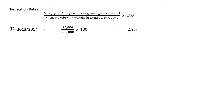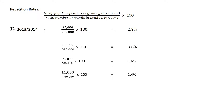Now to calculate the repetition rate. The formula says: number of repeaters in grade G in year T+1, over the total number of people in grade G in year T, times 100. Starting with 2013-2014, if you go back to find the total number of those repeating, we'll have 25 of them. So it will be 25 over 900 times 100, and that will give you 2.8%. You continue in that trend to get all the other percentages.